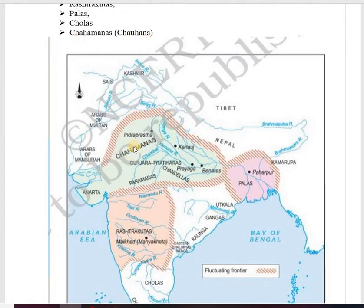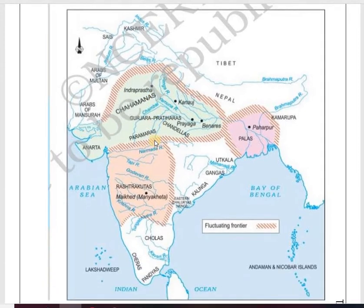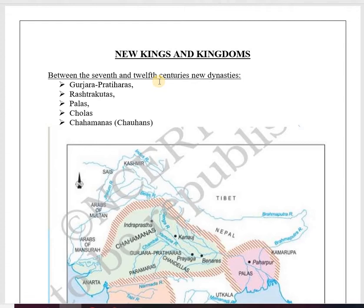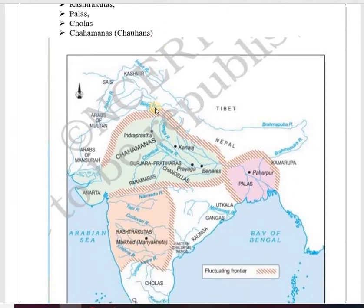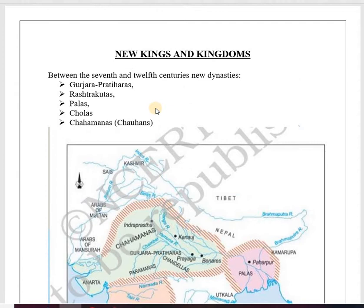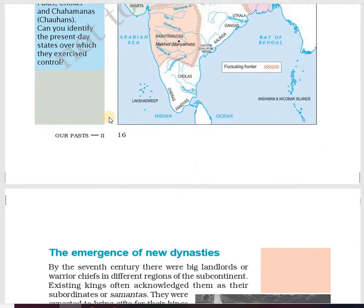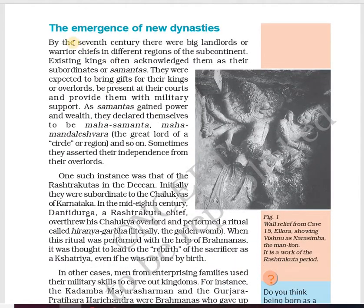The Chahamanas were in Rajasthan, parts of Haryana, from Ajmer till Delhi — earlier known as Indraprastha. These dynasties established their empires between the 7th and the 12th century within these 500 years. We'll understand how these new empires and new kings emerged. The first topic is the Emergence of New Dynasties.